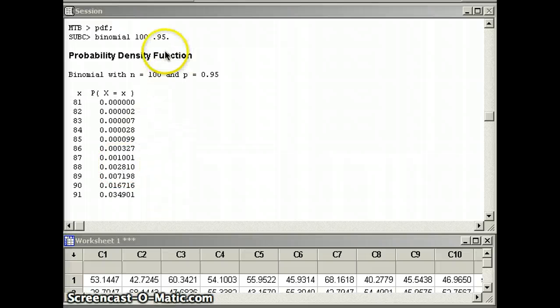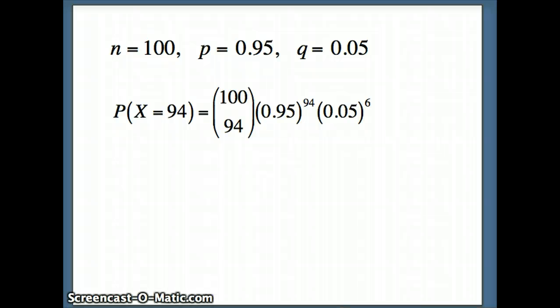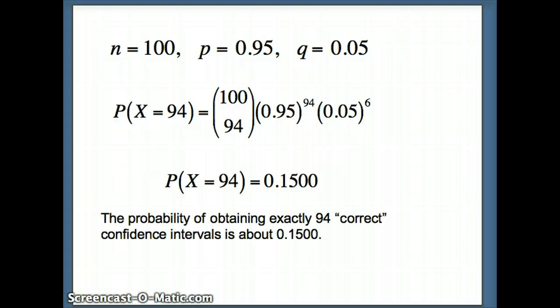We can also check with the pdf, so we're going to say pdf, semicolon, binomial 100, 0.95. And if we look to see where do we have 94, you will see that 94 shows up again with 0.1500. So my probability of having 94 correct is 0.1500, which again is a fairly high probability. So the probability of obtaining exactly 94 correct confidence intervals is indeed about 15%.